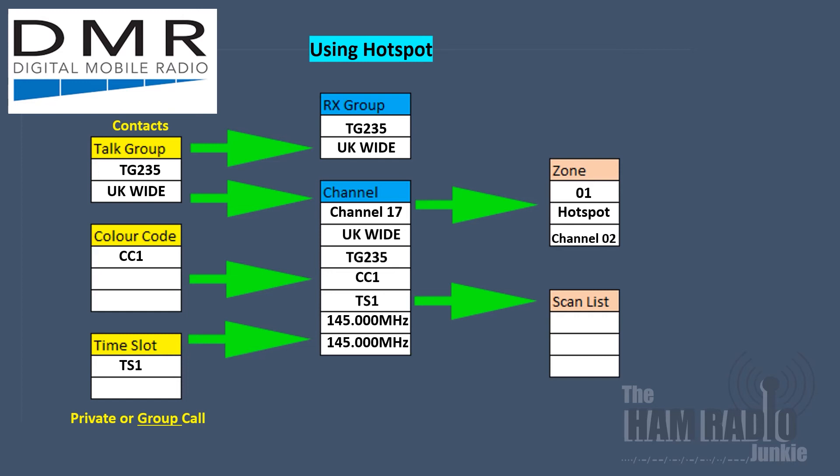The next example shows the operator setting up for the UK wide network, and this is on talk group 235. Again, the colour code access into the hotspot is colour code 1, and it's on timeslot 1. Again, this is a group call as it wants to be heard and received over the wider area. Again, the details are moved across from the contact into the receive group and the channel, then the zone, and then the scan list.